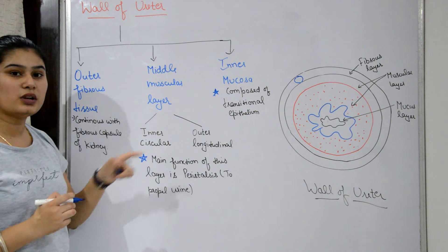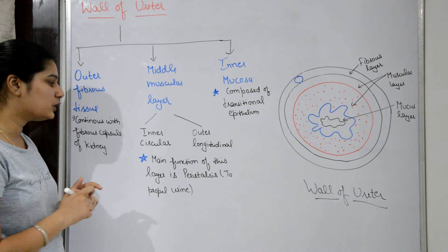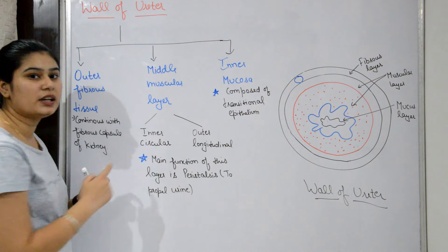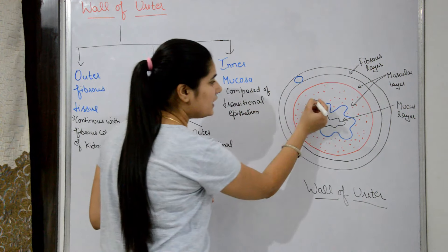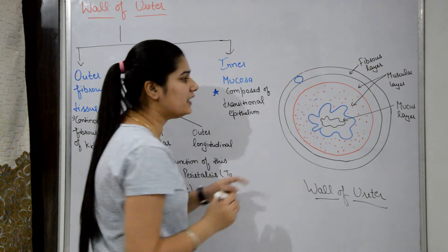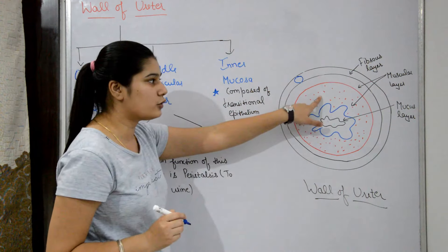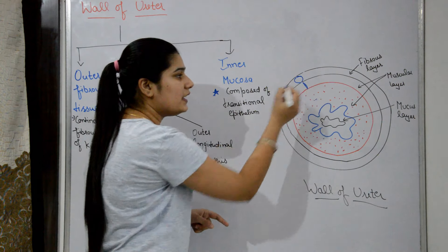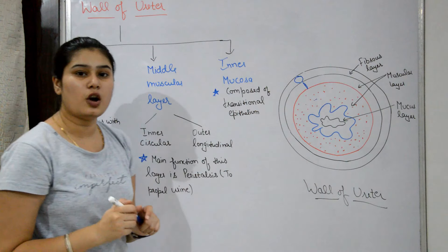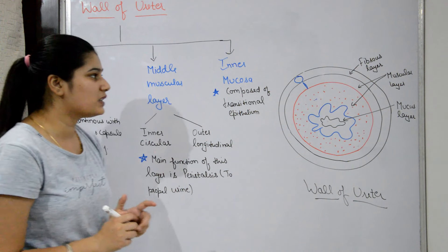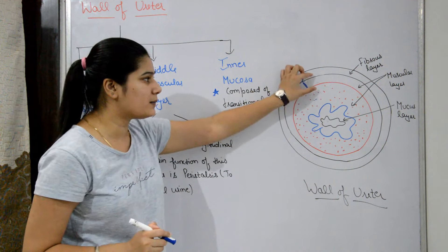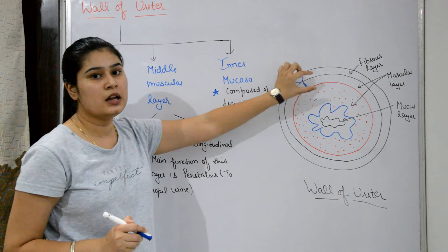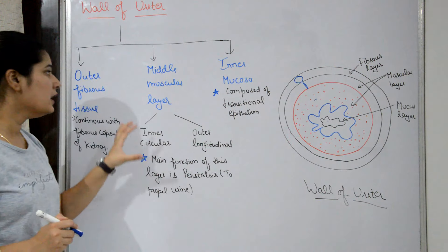The middle muscular layer has two sub-layers: an inner circular layer and an outer longitudinal layer. The muscular layer performs peristalsis to propel urine.